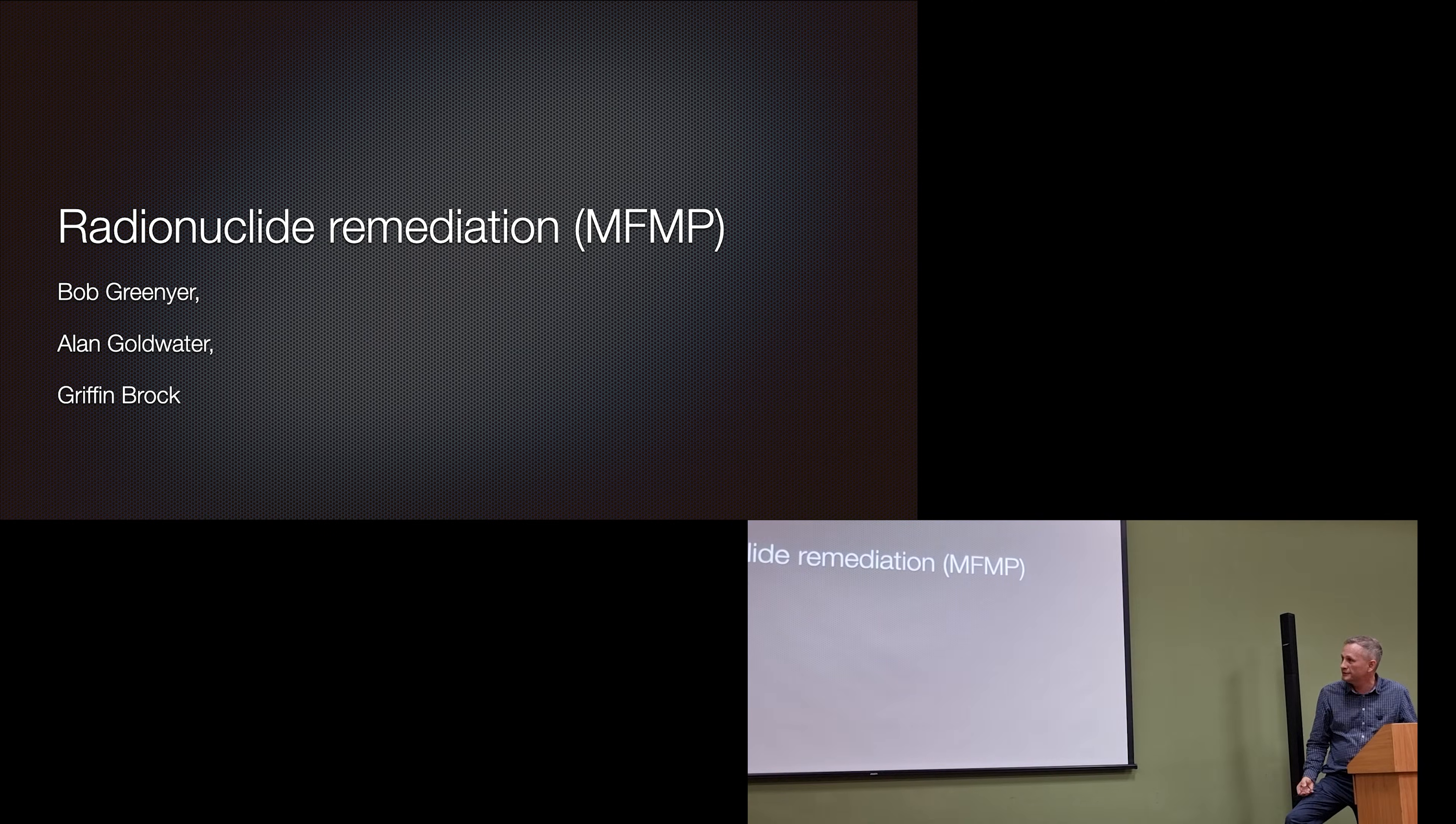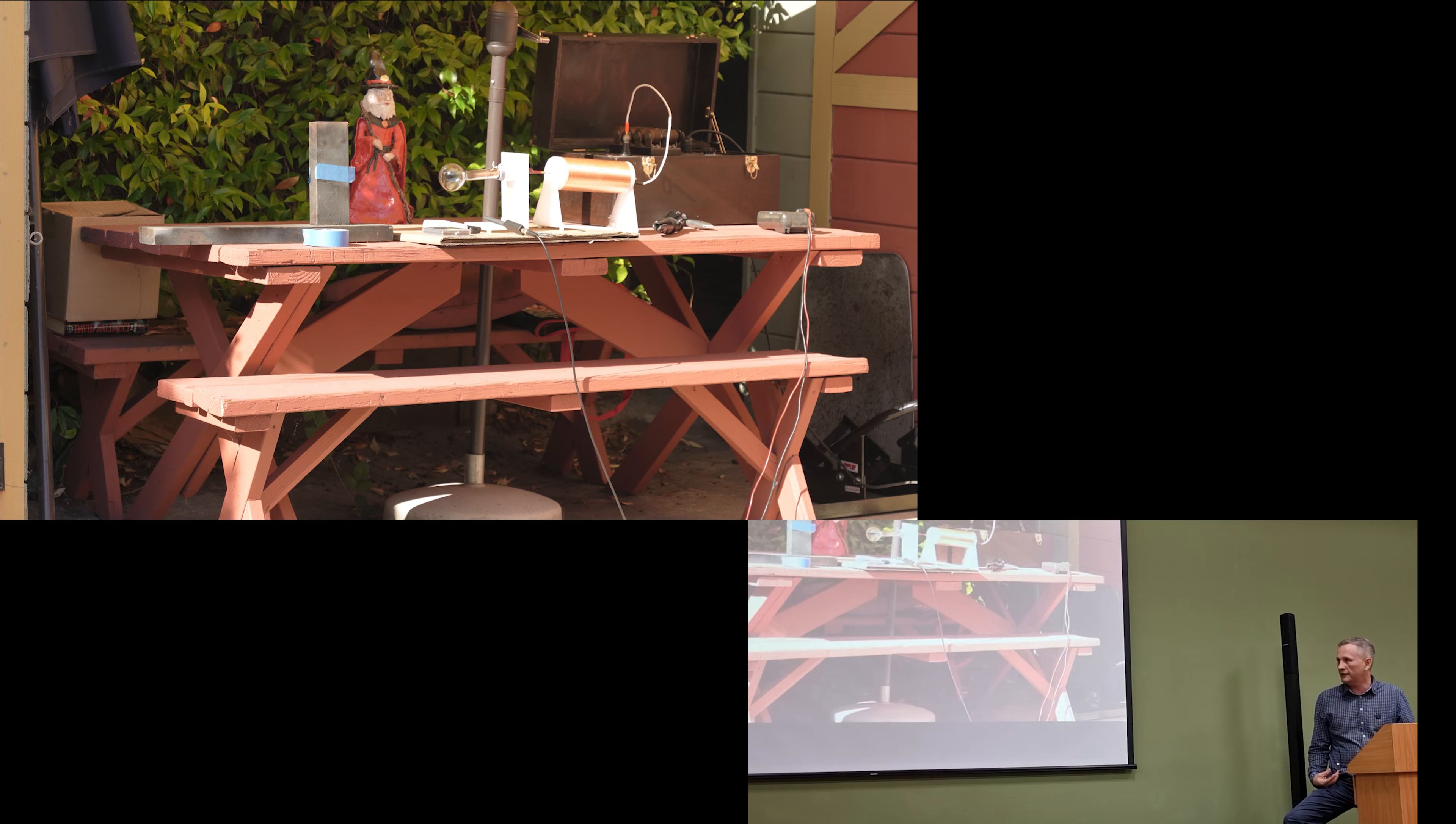So, this is one from the MFMP. And this is myself, Bob Greenyer, Al Godwater and Griffin Brock. Griffin Brock is a child prodigy. He's the first person in 120 years to replicate Tesla's shadowgraph system. I predicted that this shadowgraph system is producing dark metal rays, etheric rays, and that it would remediate nuclear waste. It would be producing directly the radiation suggested by the Filomenico data.